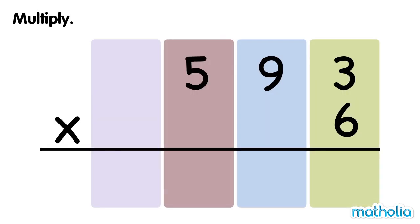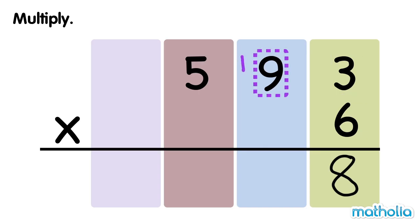Let's find 593 times 6. Multiply the ones by 6. 3 ones times 6 equals 18 ones. Regroup 18 ones into 8 ones and 1 ten. Multiply the tens by 6 and add the regrouped tens. 9 tens times 6 equals 54 tens. 54 tens plus 1 ten equals 55 tens. Regroup 55 tens into 5 tens and 5 hundreds.